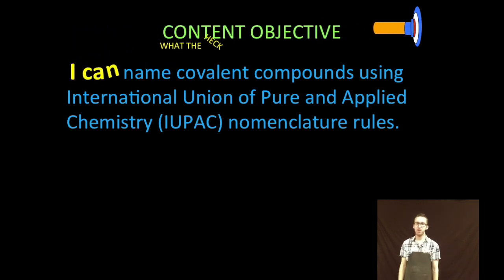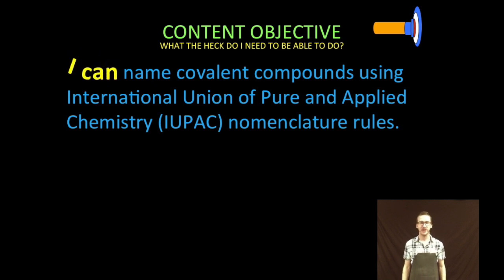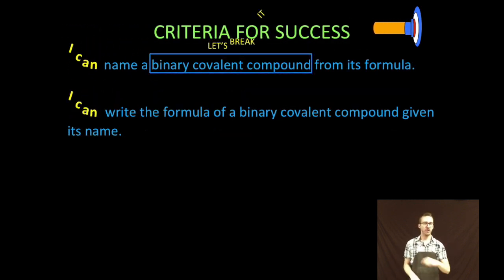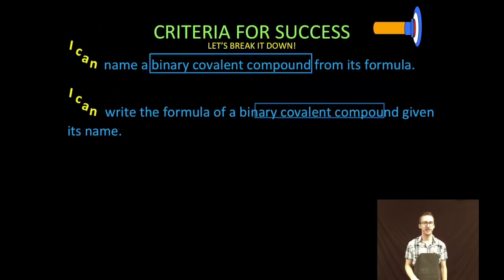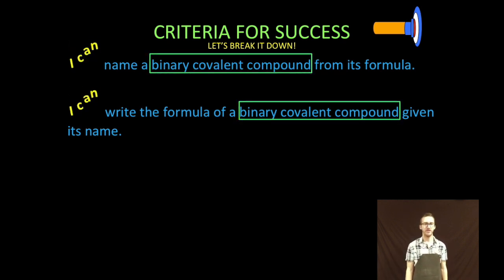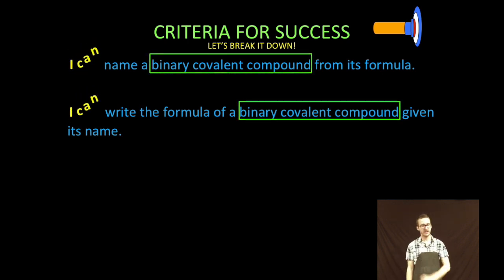Hey, what's up everybody, it is Mr. Boylan back for some more fun! Today in this video we are going to name covalent compounds using International Union of Pure and Applied Chemistry IUPAC nomenclature rules. Two things we're gonna do: first, we are going to name a binary covalent compound from its formula. Second, we are going to write the formula of a binary covalent compound given its name.